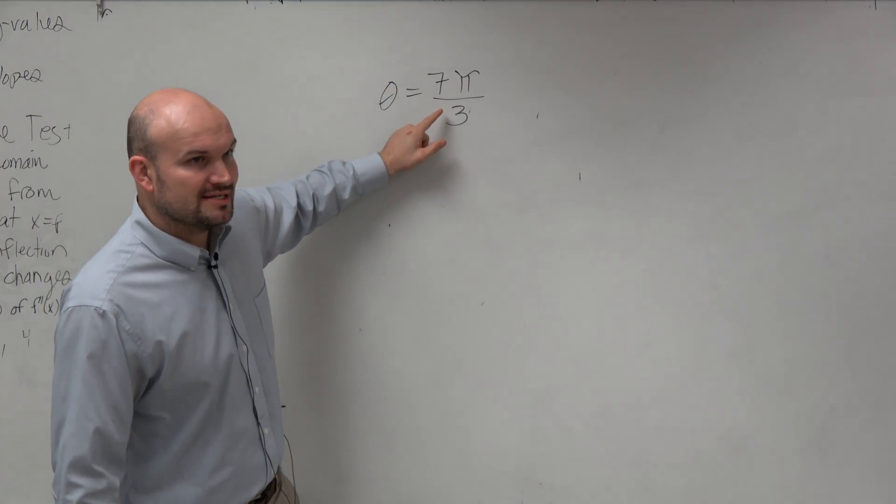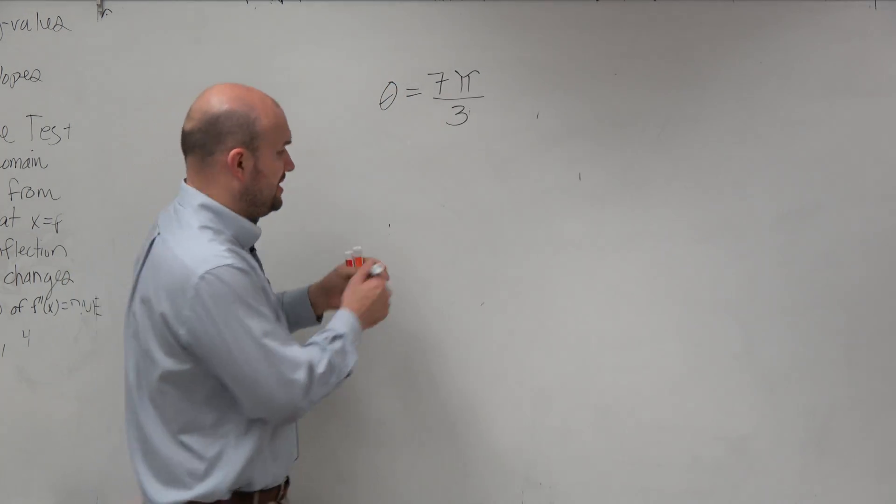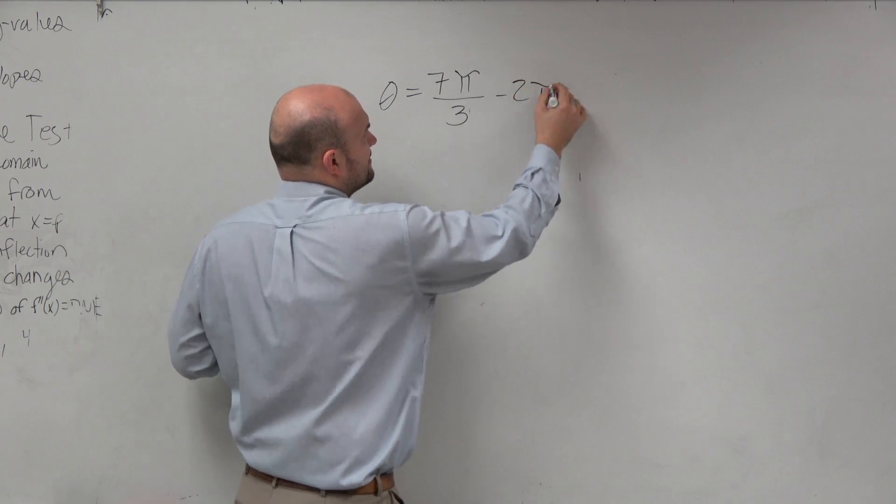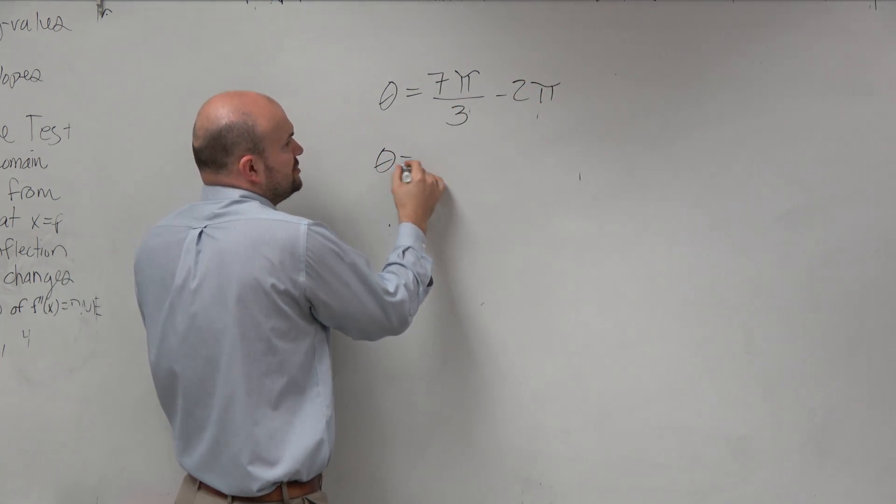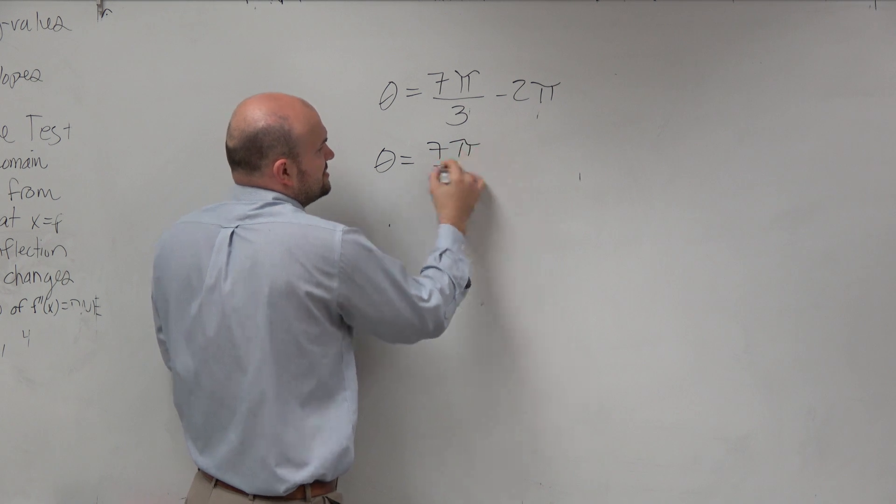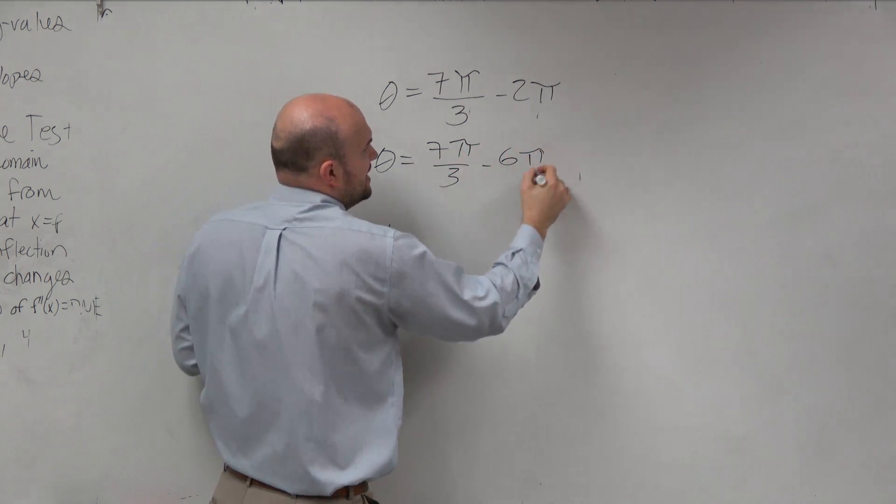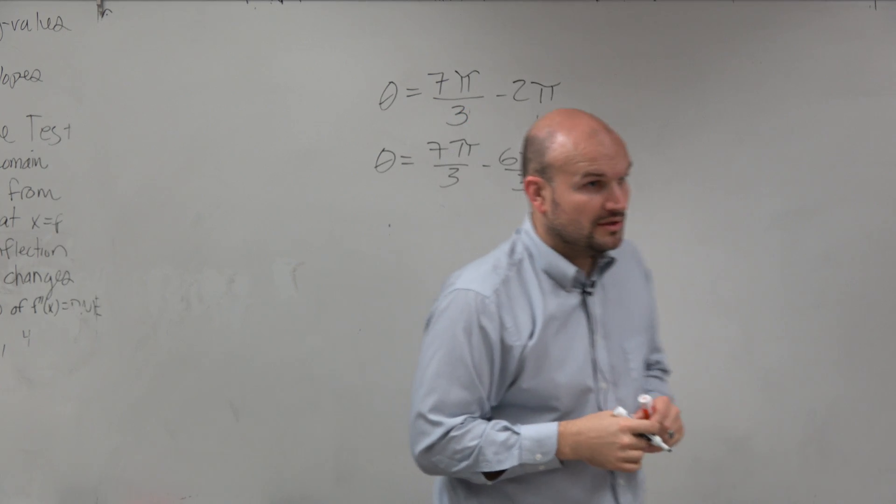Well, I don't want to add 2π to this. I want to subtract 2π. But I don't really want to subtract 2π, then I got to do fractions. Couldn't you guys agree that I could actually just take 3 and just subtract 6π over 3? Right? Why?